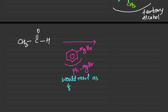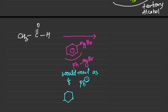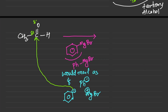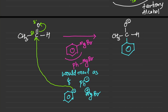PhMgBr reacts as if it were Ph⁻ (phenyl anion). Following the same rule — nucleophile attacks the δ+ carbon, pi electrons push towards oxygen — we form the tetrahedral intermediate: CH3-C(O⁻)(H) with the benzene ring attached. This carbon is a stereocenter, so we get a racemic mixture of both enantiomers.